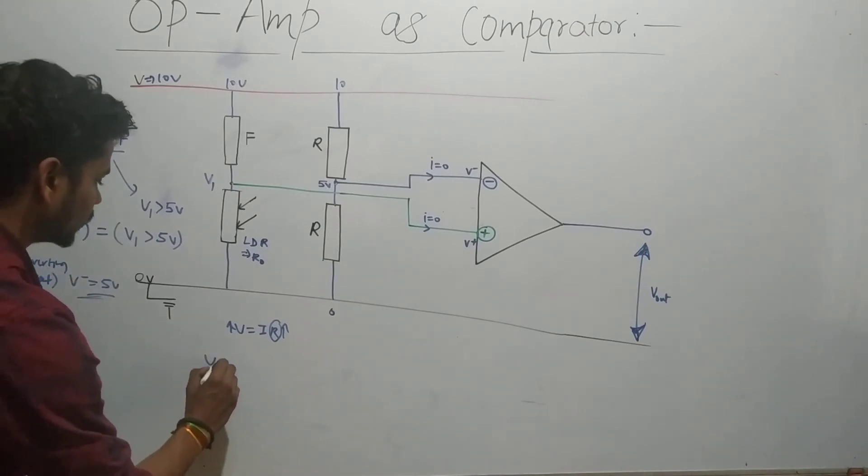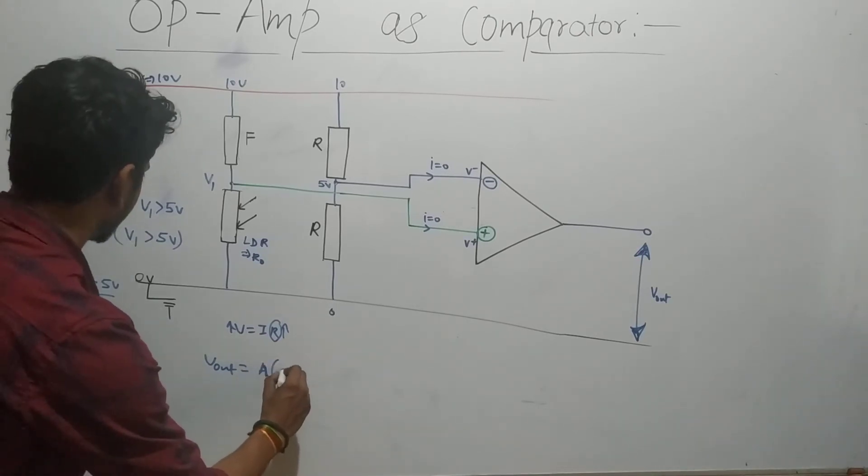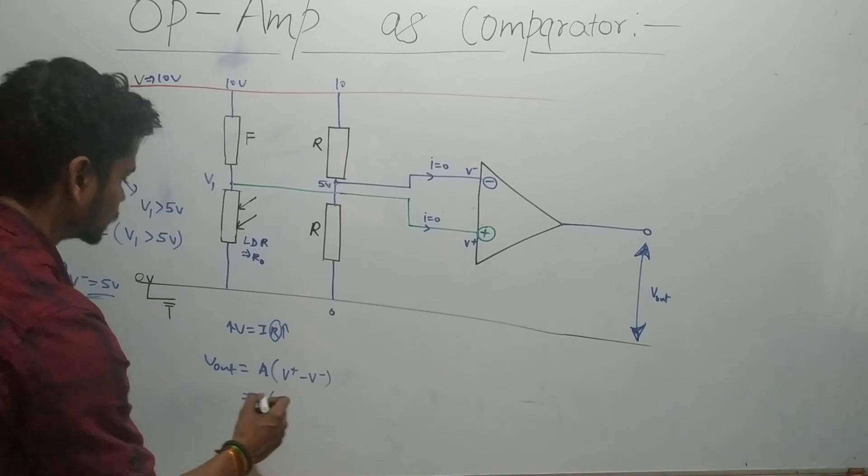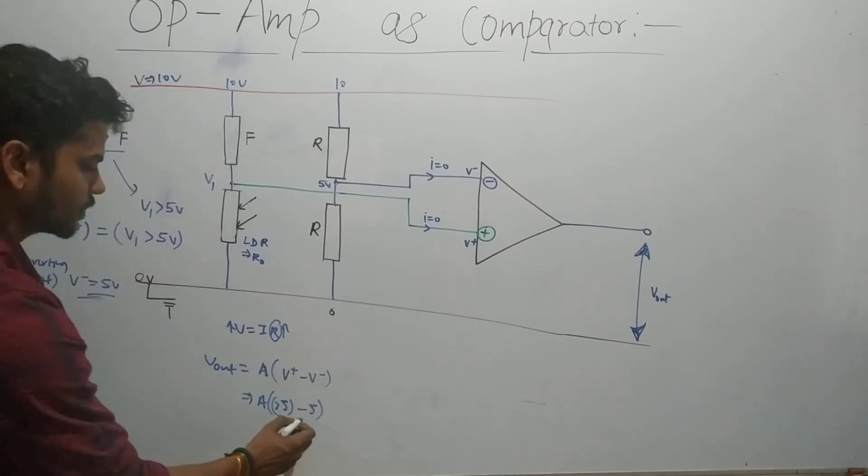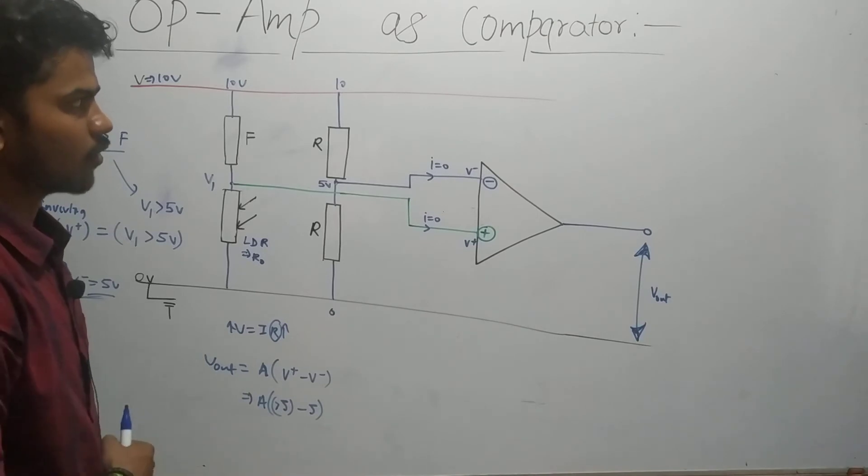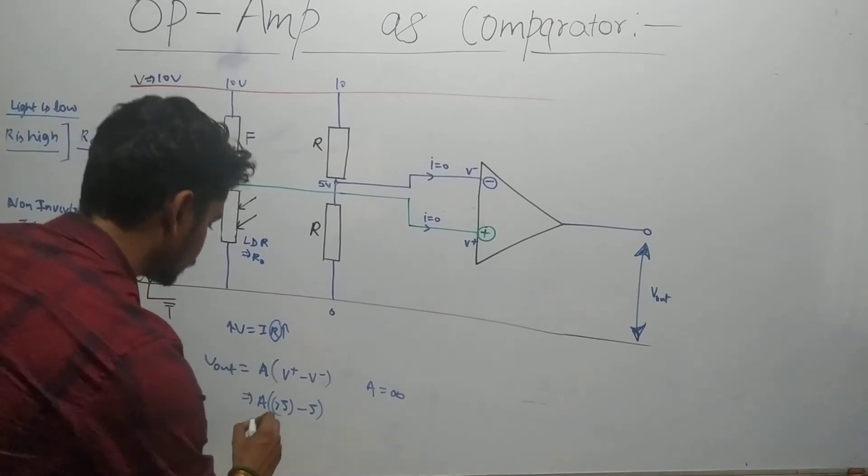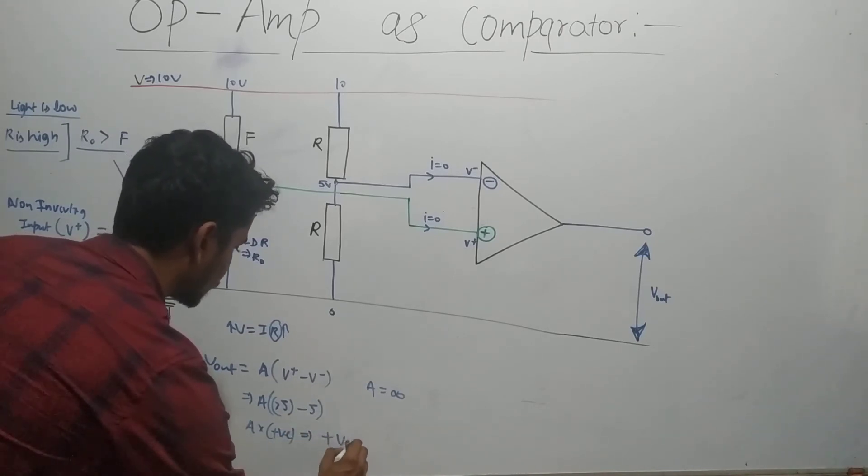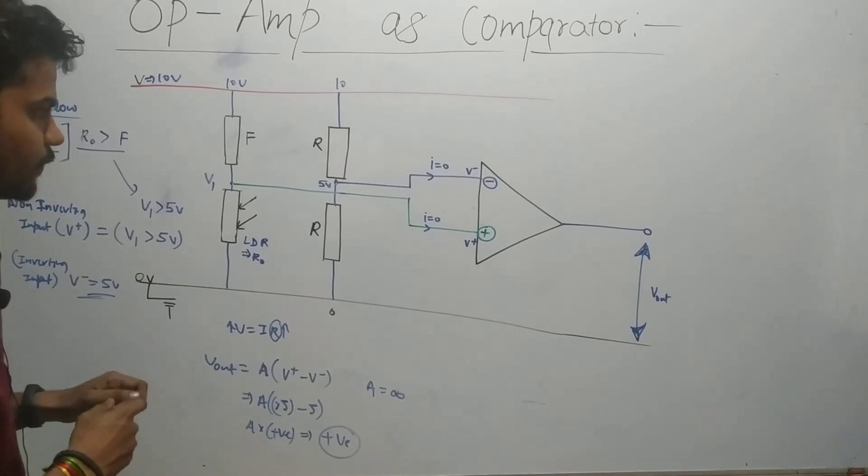Based on these, we can calculate output voltage. We know that V_out equals A times (V+ minus V-). If I plug in the values, V+ is a number greater than 5, minus 5. This will be a positive number. We're using an ideal op-amp, so A is a very large number, approximately 10^5. A times a positive number gives a positive output. So when the LDR has low light, it will give a positive output.